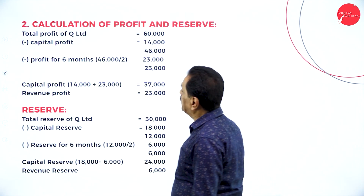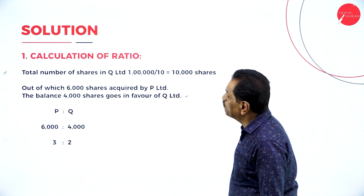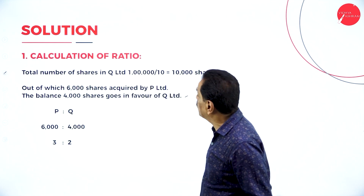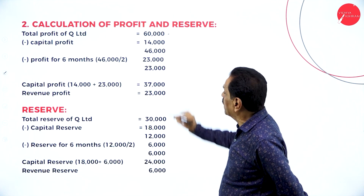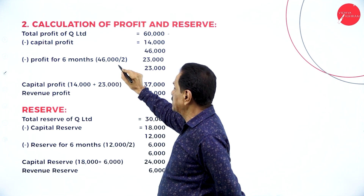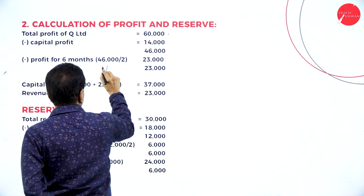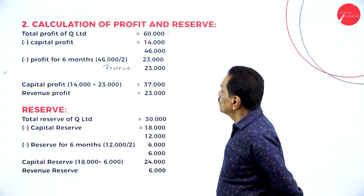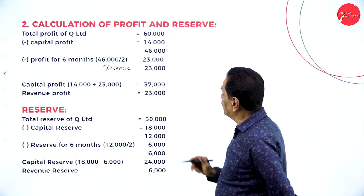Total profit in Q-Limited as per the balance sheet is 60,000. Capital profit at the time of acquisition is 14,000. Balance is 46,000. Acquired after 6 months, so 46,000 divided by 2 is 23,000 — this is revenue profit, and the remaining 23,000 is the other half. Total capital profit: 14,000 plus 23,000 equals 37,000. Revenue profit is 23,000.